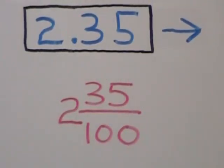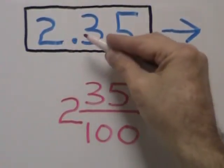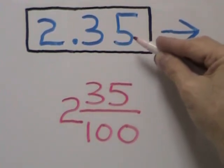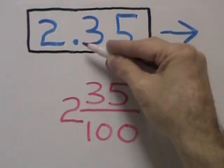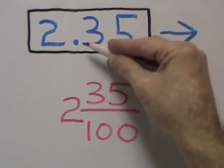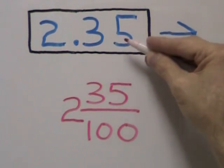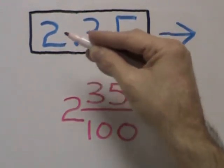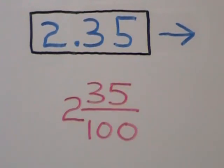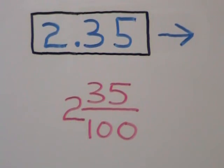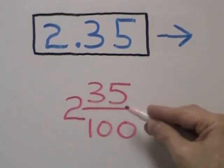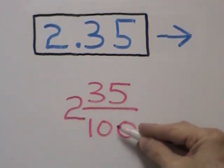In this example, 2.35 — the decimal portion of this number, .35, is a part of 2. In fraction form, we would read this number as 2 and 35 hundredths.